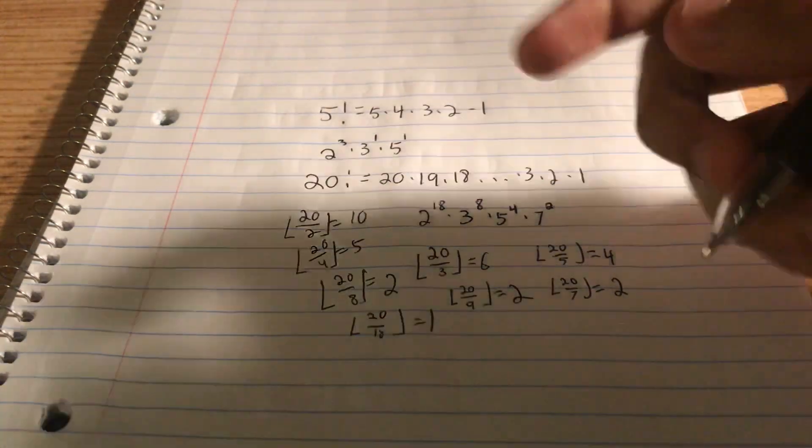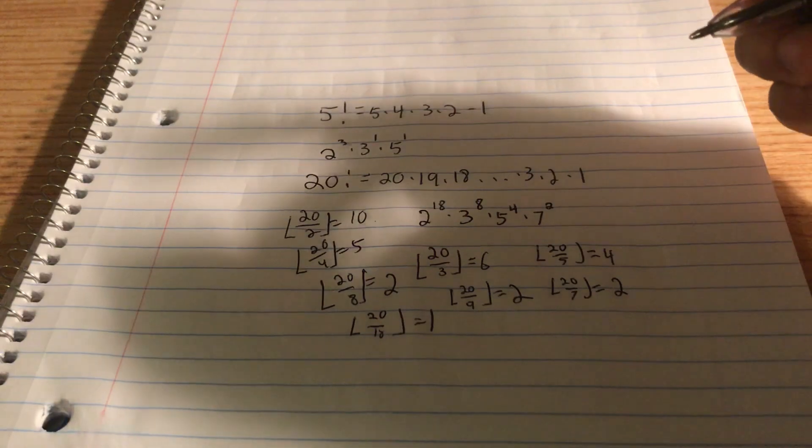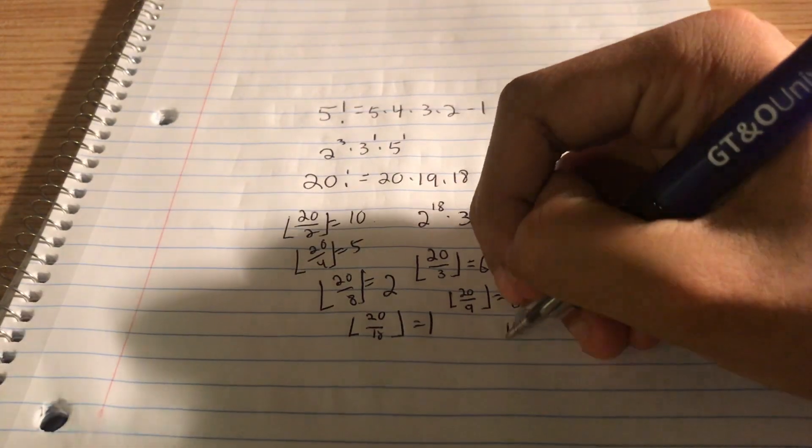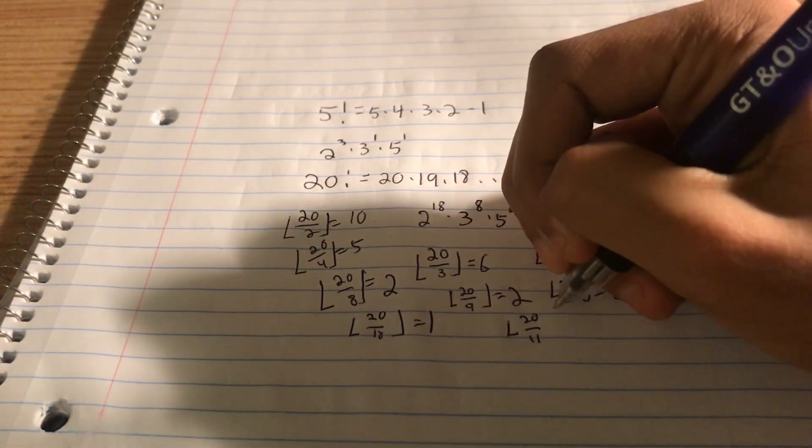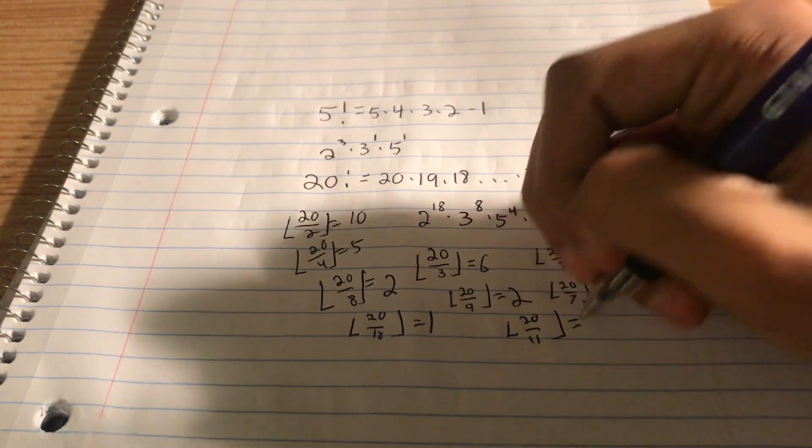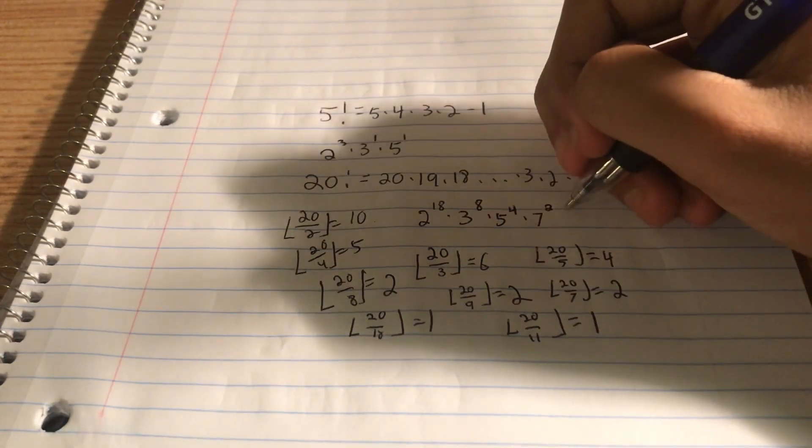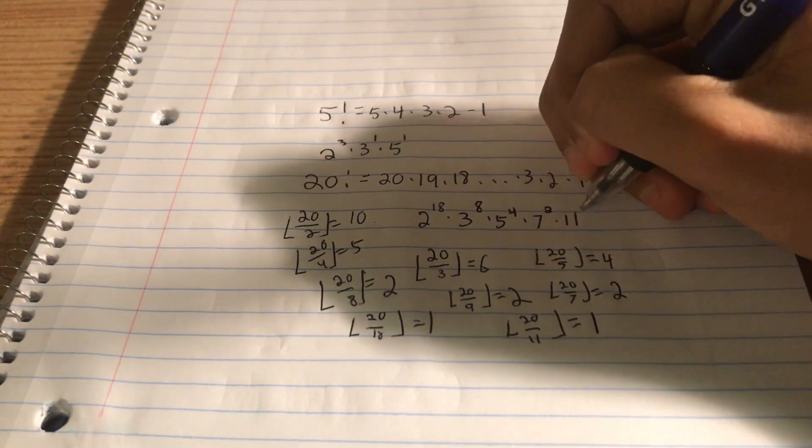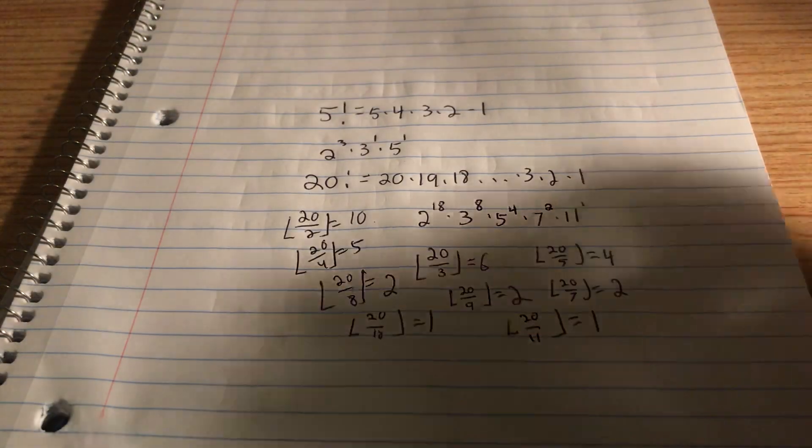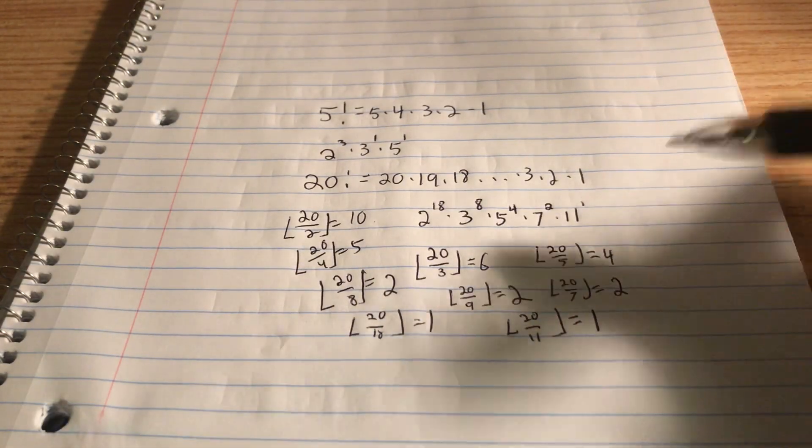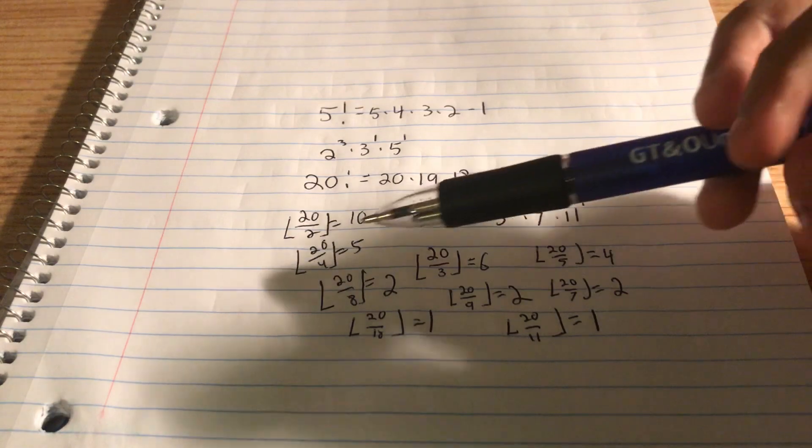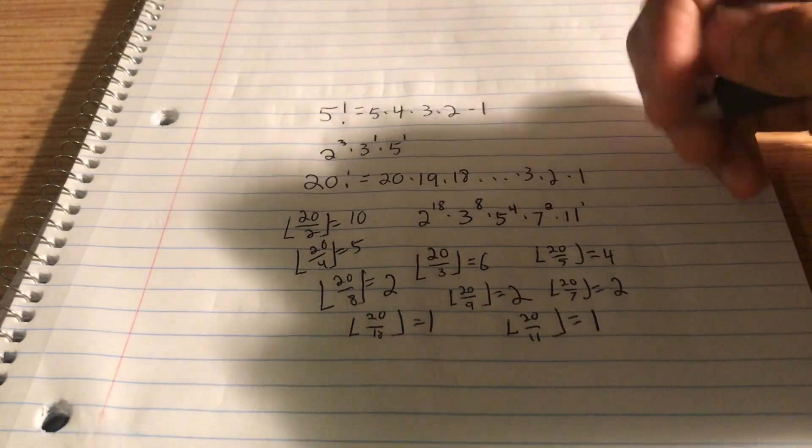Let's see. 8 is not prime. 9 isn't prime. 10 isn't prime. 11. Well, the floor of 20 divided by 11 is 1 point something, a.k.a. just 1. So there's just 1 power of 11. And again, we don't have to look for 11 squared because 11 squared is 121, which is 101 bigger than 20. So we don't have to worry about that.